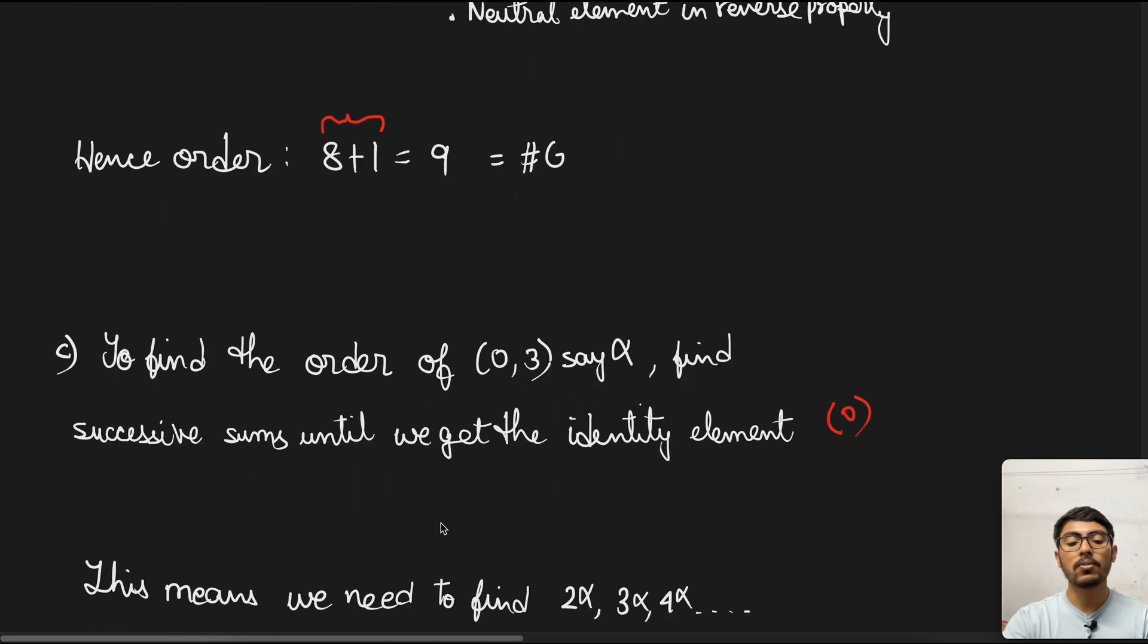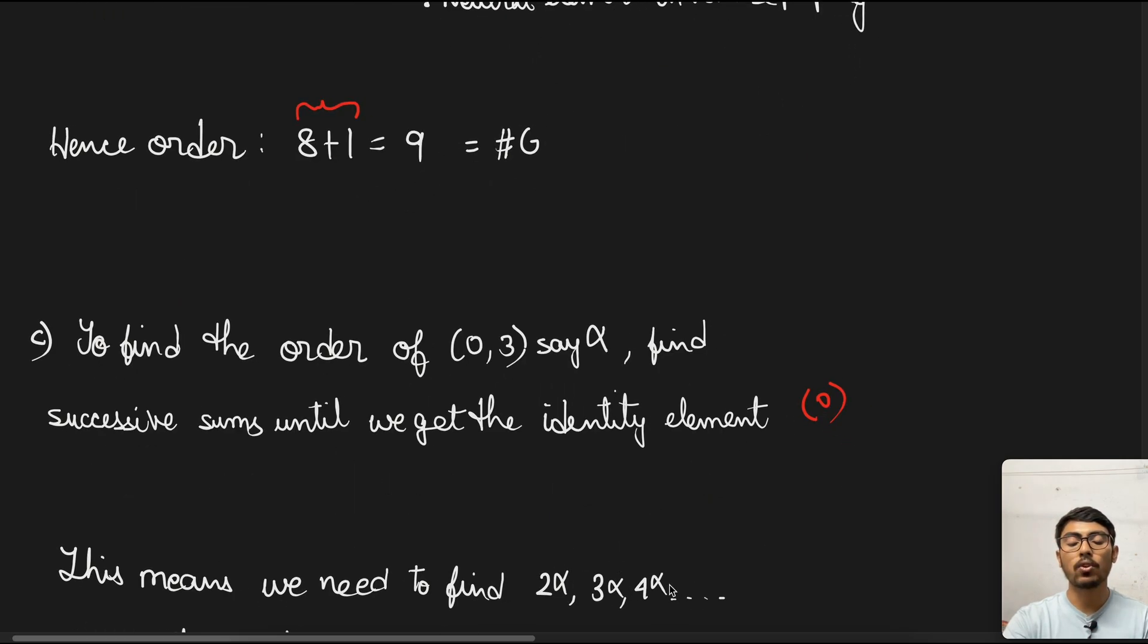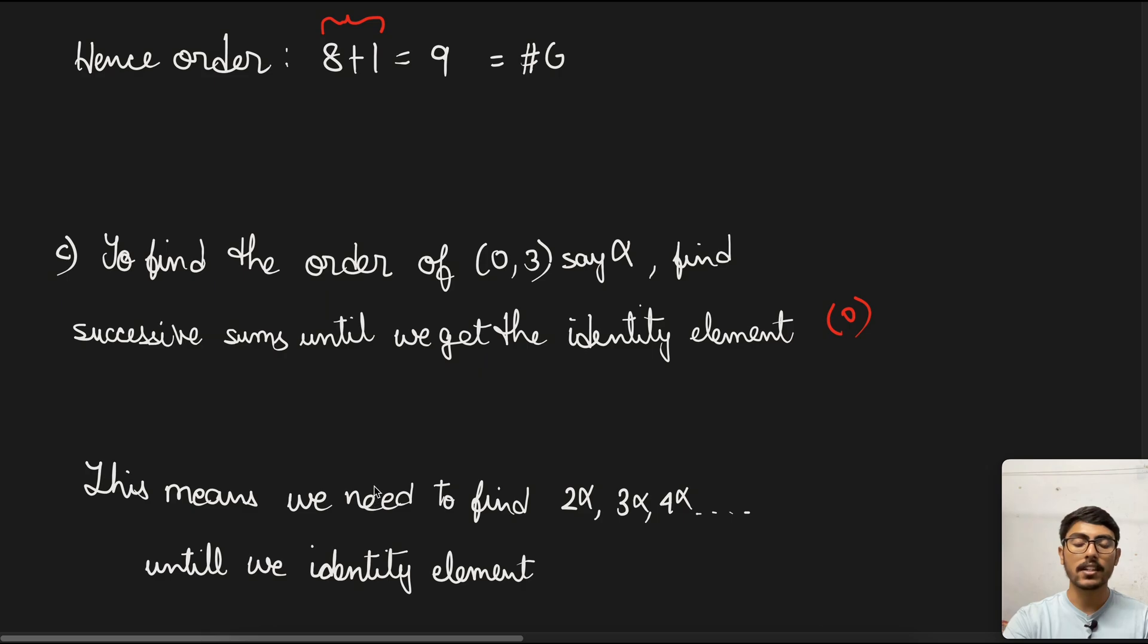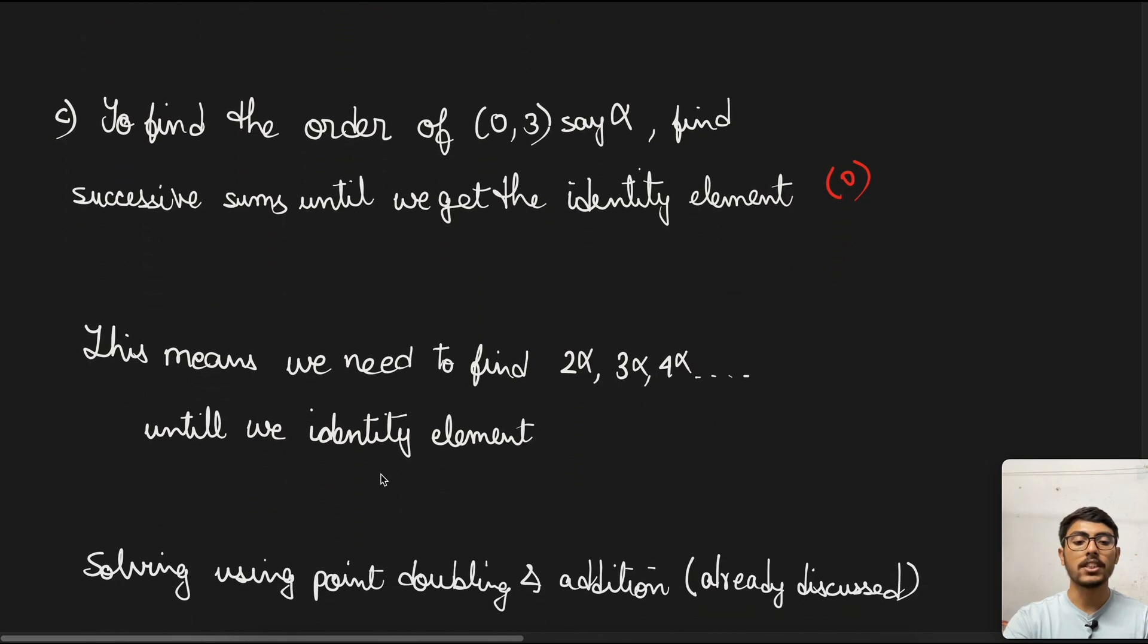Identity element is O, as we discussed above. For that, we need to find 2α, 3α, 4α, and so on until we get the identity element. This we can achieve by the point doubling and addition method, which is another important concept in elliptic curve cryptography. I have already discussed point doubling and point addition in a previous video linked in the i button. I will skip the calculations and go straight to the answer.